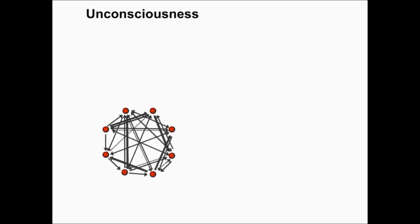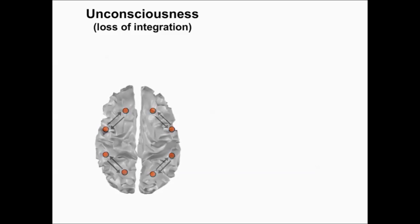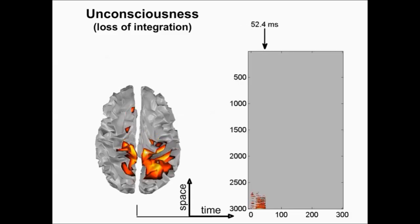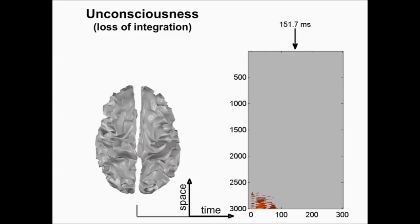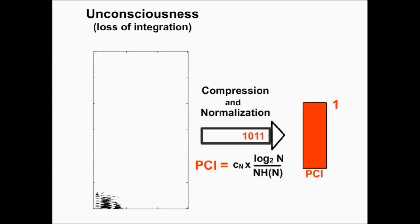During unconsciousness, two phenomena can occur: a loss of integration and a loss of information. In the first case, a modular system that lacks integration between its elements will react with a local response. The brain will still react to the stimulation, as you see, but it stays local and does not spread all over the brain. Moreover, it does not last long. This response is easier to compress, and when compressed it will give a low value of complexity — here the PCI will be 0.23.